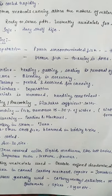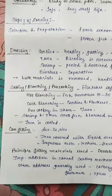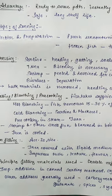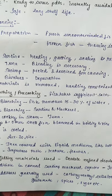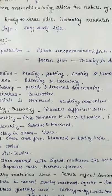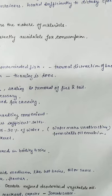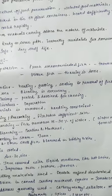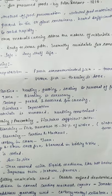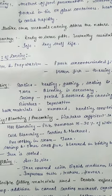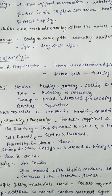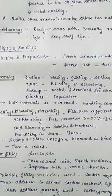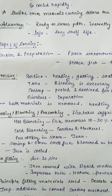Then salting, blanching, and pre-cooking are done. Fish takes up sufficient salt during blanching. There are three types of blanching: hot blanching, cold blanching, and pre-cooking in steam. In hot blanching, fish lose 50 to 30 percent water. Water makes the product unattractive and a water-oil emulsion can form, so water is removed during hot blanching.